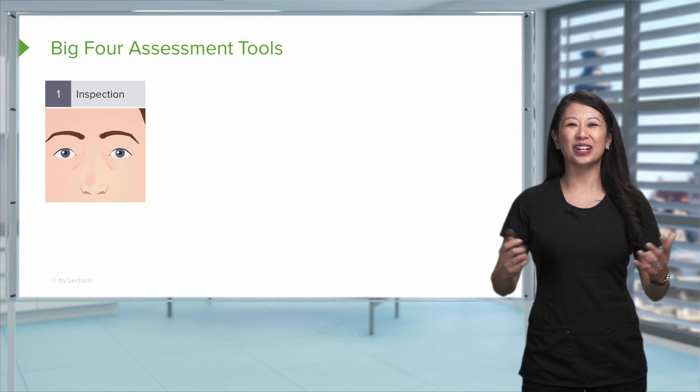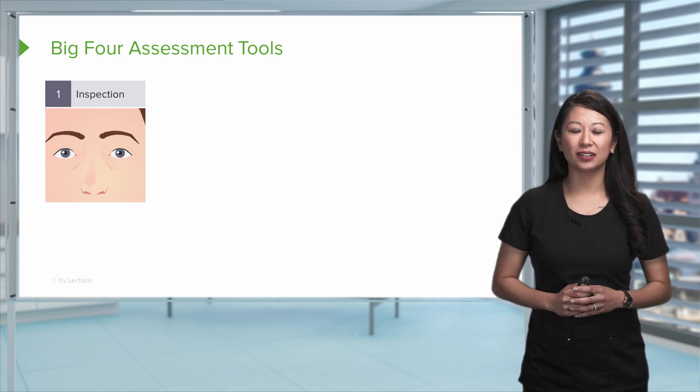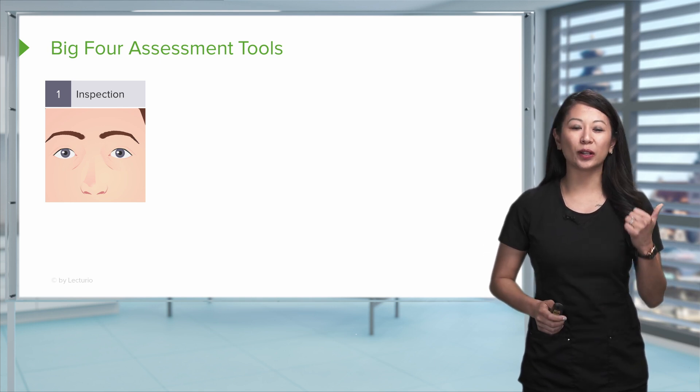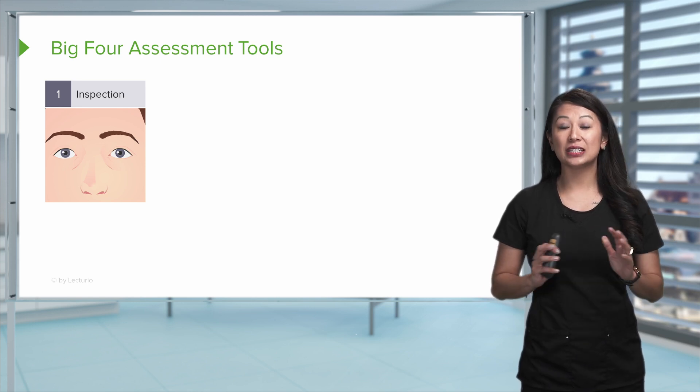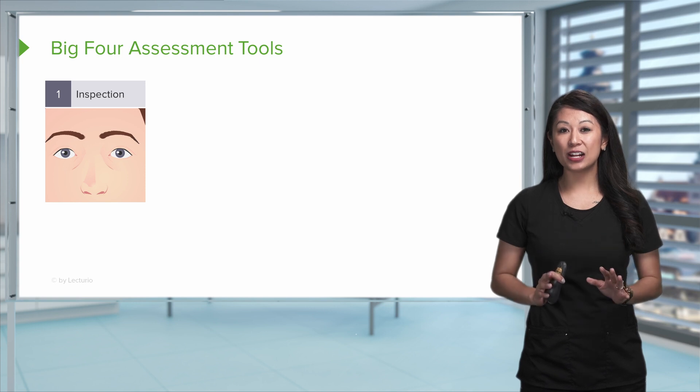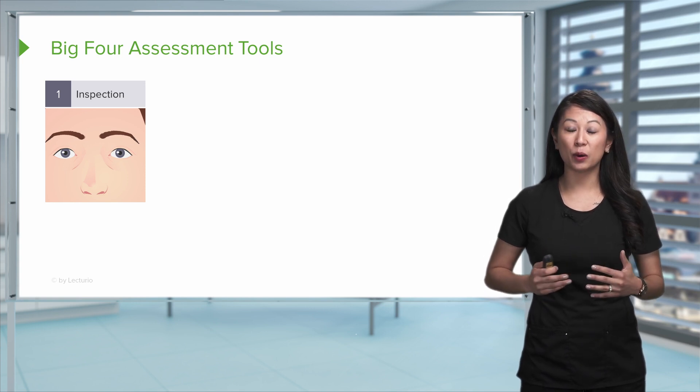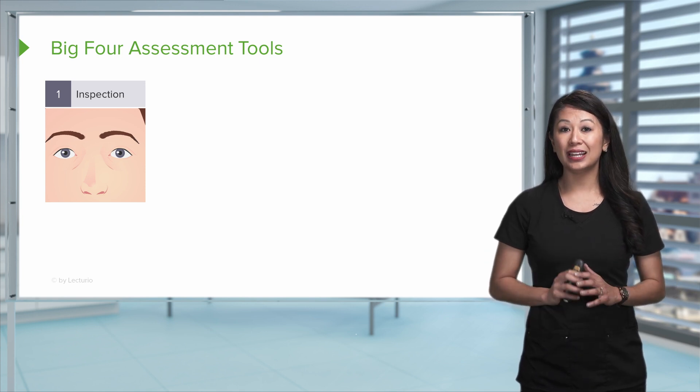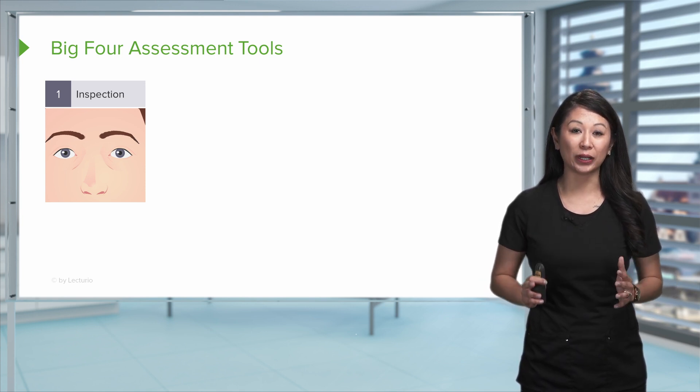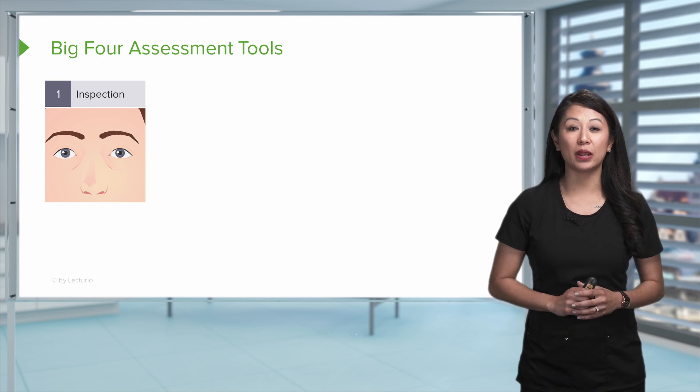So one of those is one of the easiest, which is inspection. Now we kind of talked about this earlier when we were talking about eyeballing and visually looking at our patient. So inspection is great. It actually, we tend to underestimate this, but we can see a lot, especially with more experience as you gain as a nurse. Inspection gives us a lot of really important patient condition information.